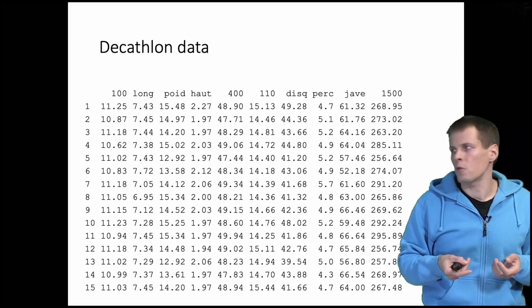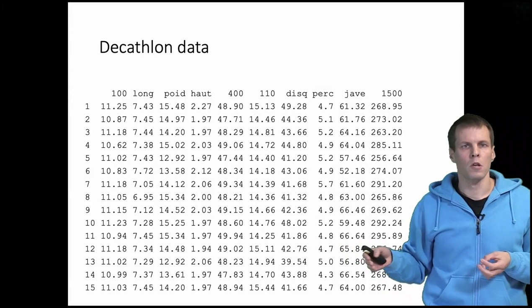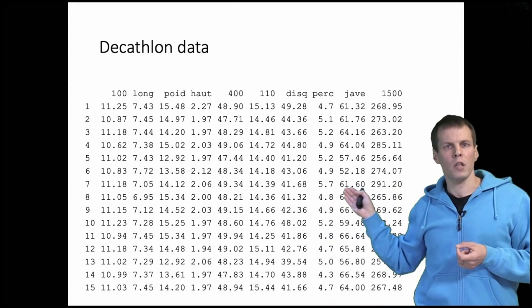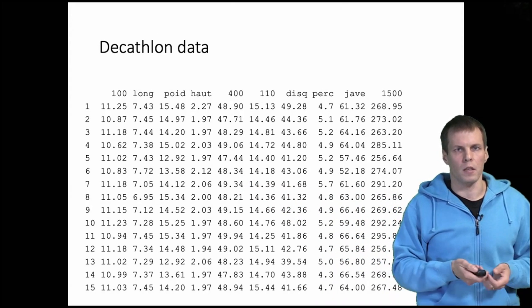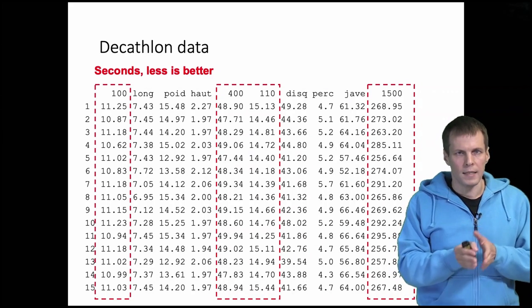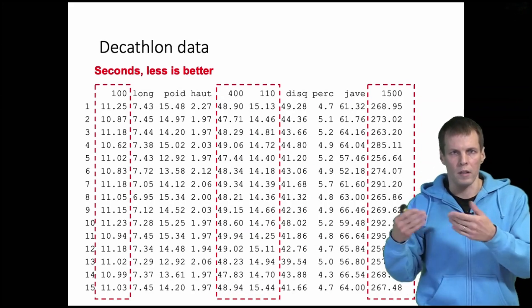This is the first 15 observations. Observations are on the rows and variables are on the columns. To understand what these numbers mean we need to understand the units. We have the running sports which are seconds, less is better, more is slower and therefore not as good.